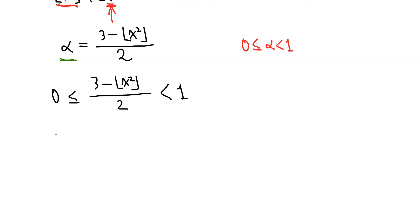And we can easily solve this inequality. If we solve this inequality, we obtain that floor x squared is larger than 1 and less than or equal to 3. So now we have the inequality about floor x squared.